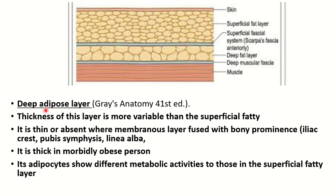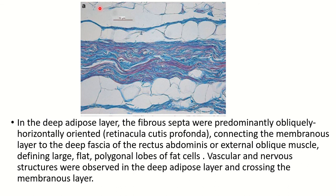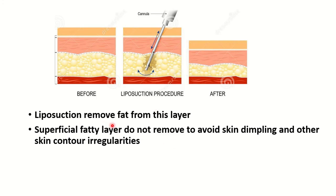The deep adipose layer: the thickness of this layer is more variable than the superficial fatty layer, and it is thin or absent where the membranous layer is fused with bony structures like the iliac crest, pubic symphysis, and linea alba — at those particular locations this layer is absent. It is thick in morbidly obese persons, and its adipose tissue shows different metabolic activity compared to the superficial fatty layer. This is the superficial fatty layer, this is the membranous layer, and this is the deep adipose layer. Liposuction removes fat from this deep layer; the superficial fatty layer is not removed to avoid skin dimpling and other skin contour irregularities.